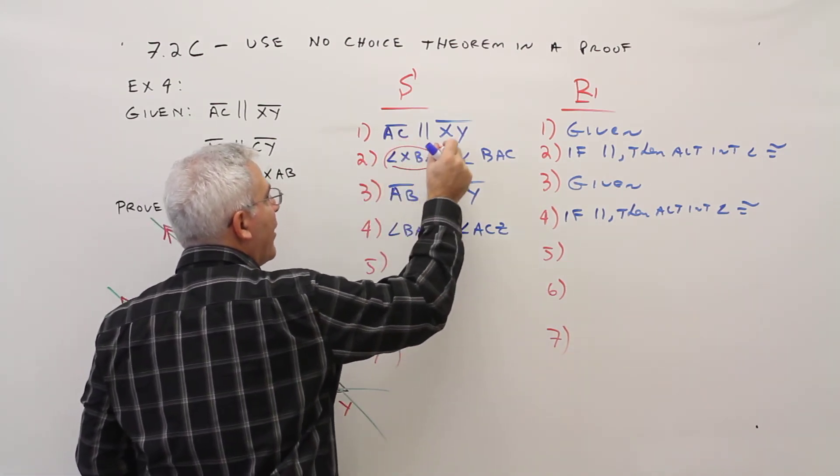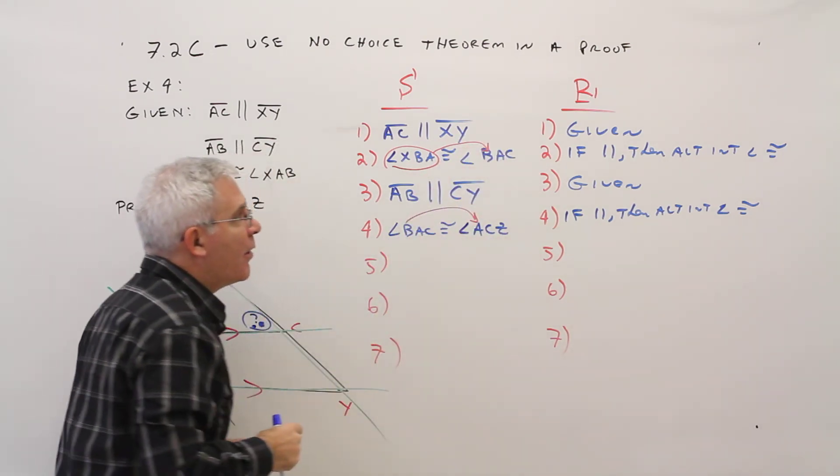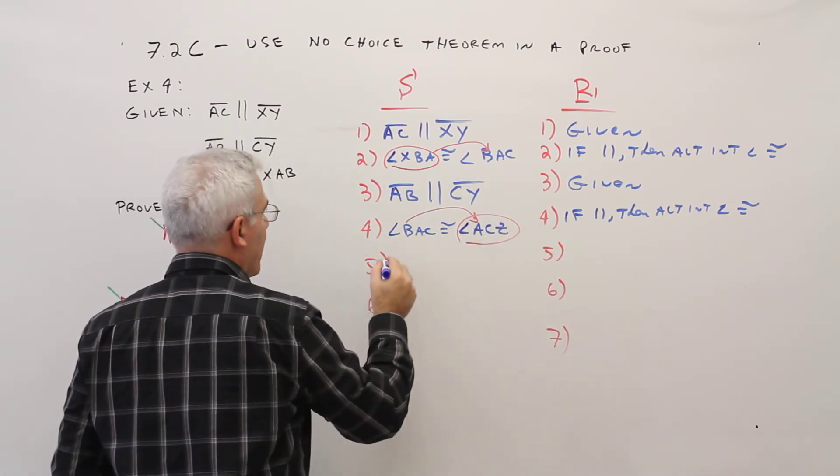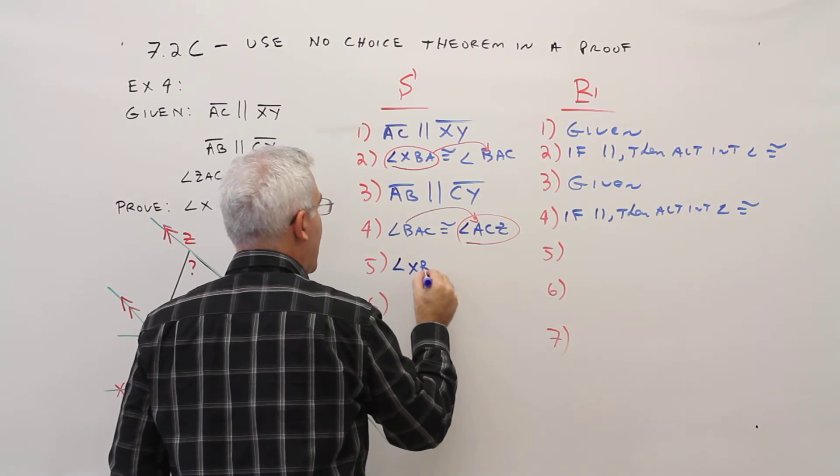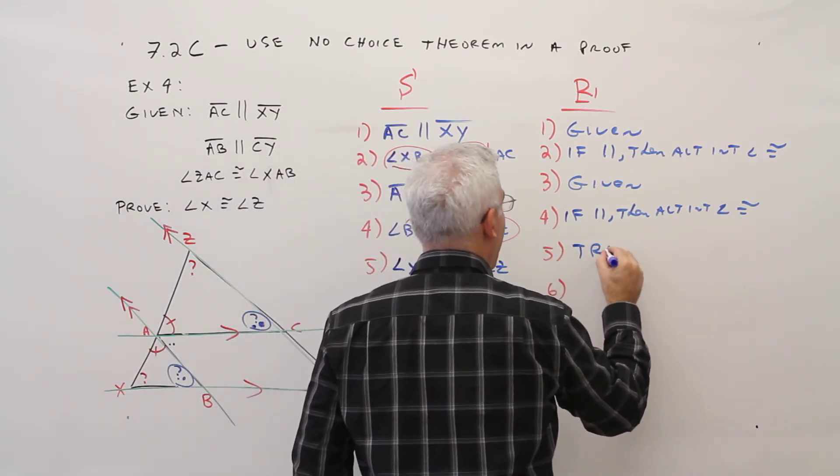So this angle goes to angle BAC, and then angle BAC will jump to angle ACZ. So angle XBA is congruent to angle ACZ by transitive.